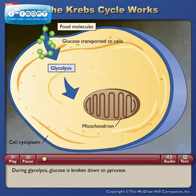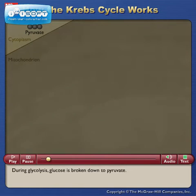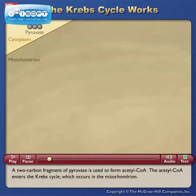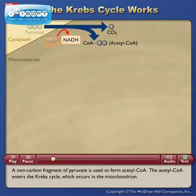During glycolysis, glucose is broken down to pyruvate. A two-carbon fragment of pyruvate is used to form acetyl CoA. The acetyl CoA enters the Krebs cycle, which occurs in the mitochondrion.